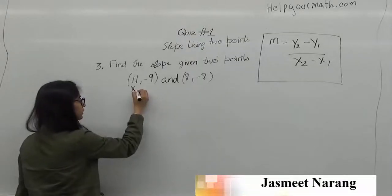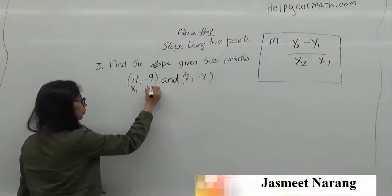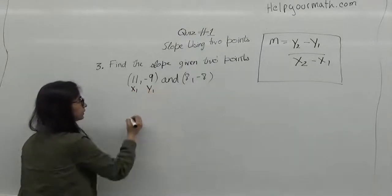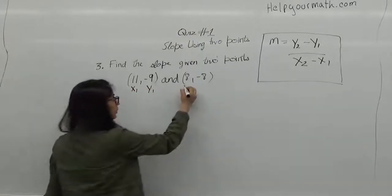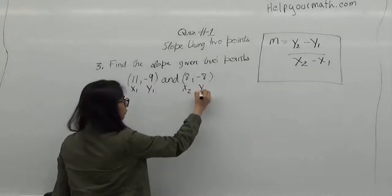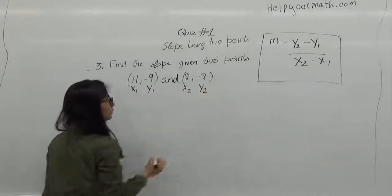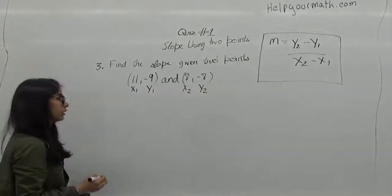x1 is 11, y1 is minus 9, x2 is 8, and y2 is negative 8.